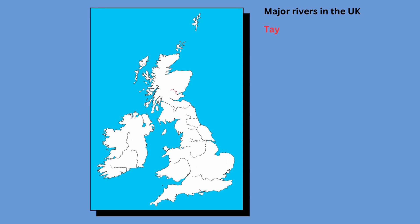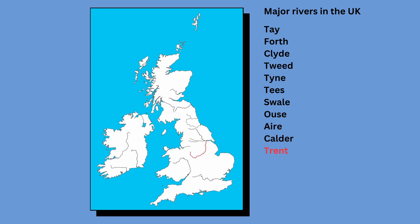Here are some of the major ones. In Scotland, there is the Tay, the Forth and the Clyde. On the border of Scotland and England, there is the Tweed. In England, there is the Tyne and the Tees. The Swale, the Ouse, the Aire, the Calder and the Trent are some of the rivers running into the Humber. The Humber estuary drains a catchment area of around 20% of the total land surface of England.